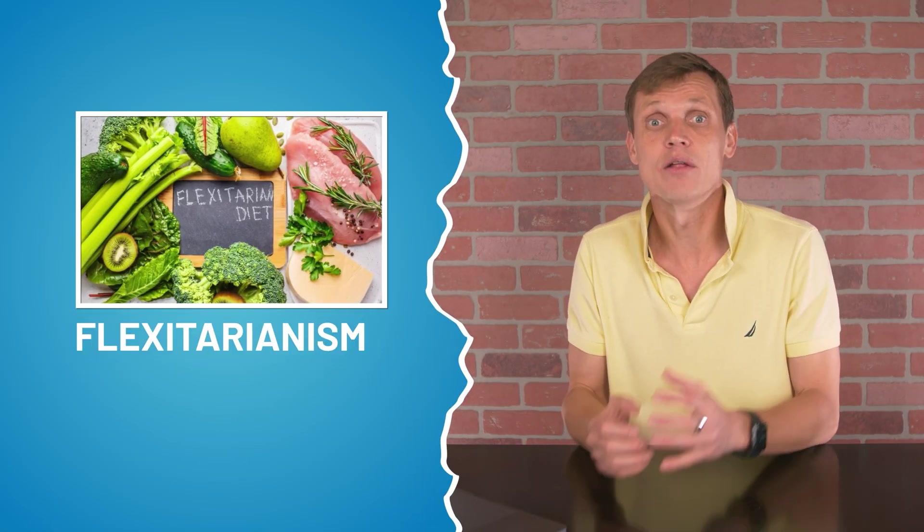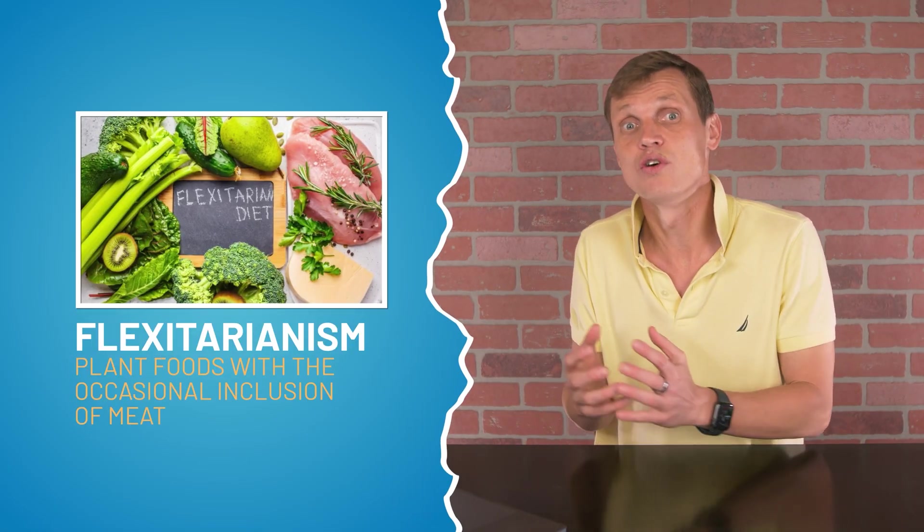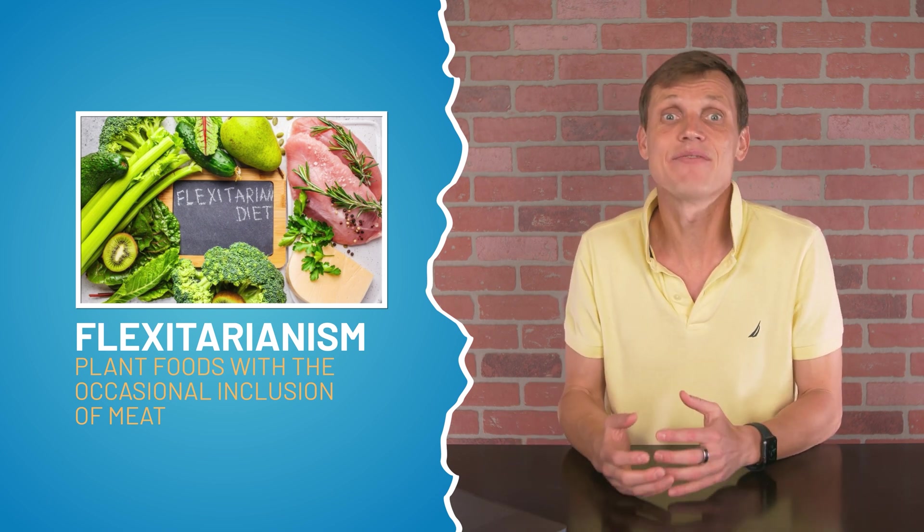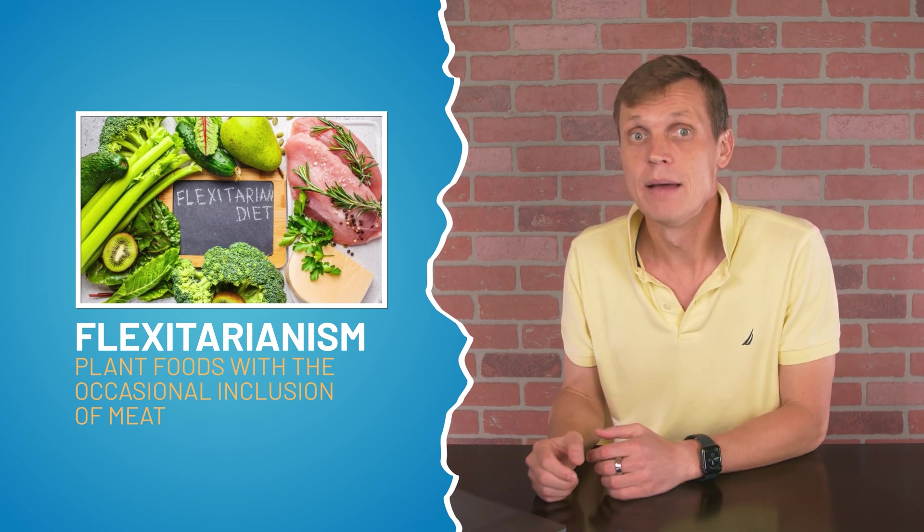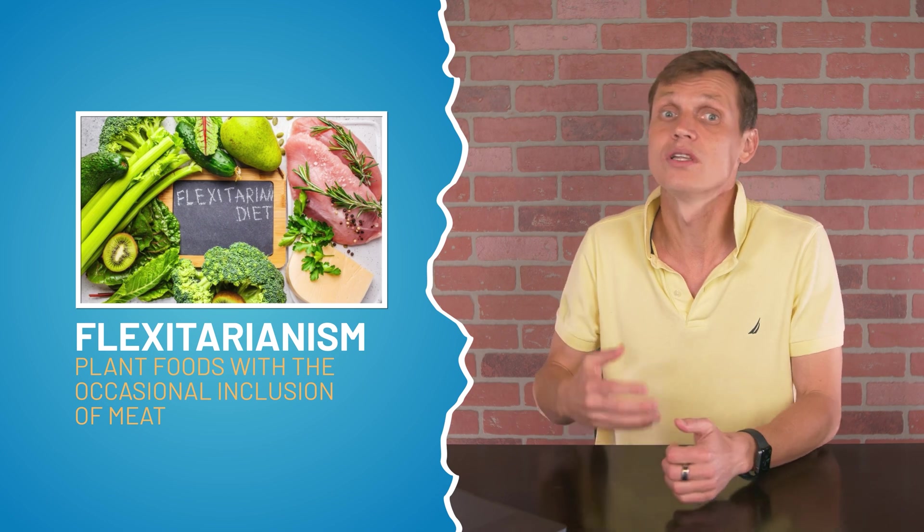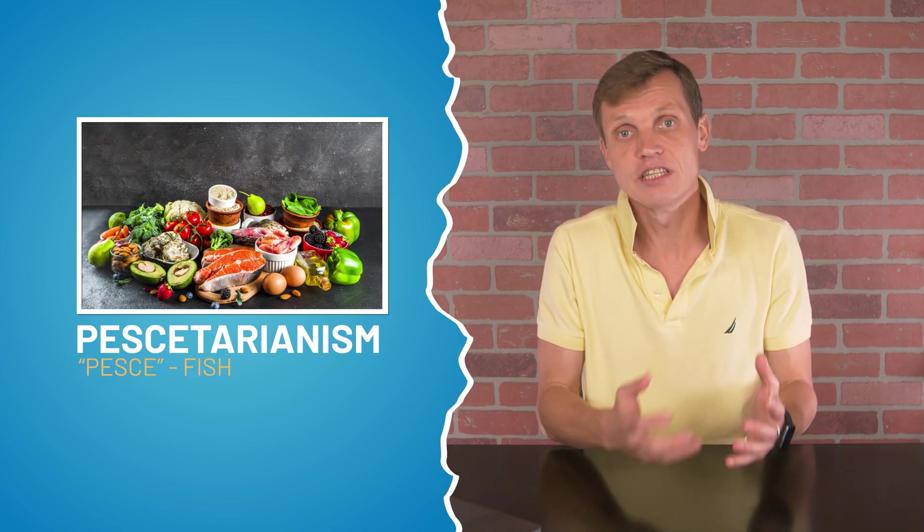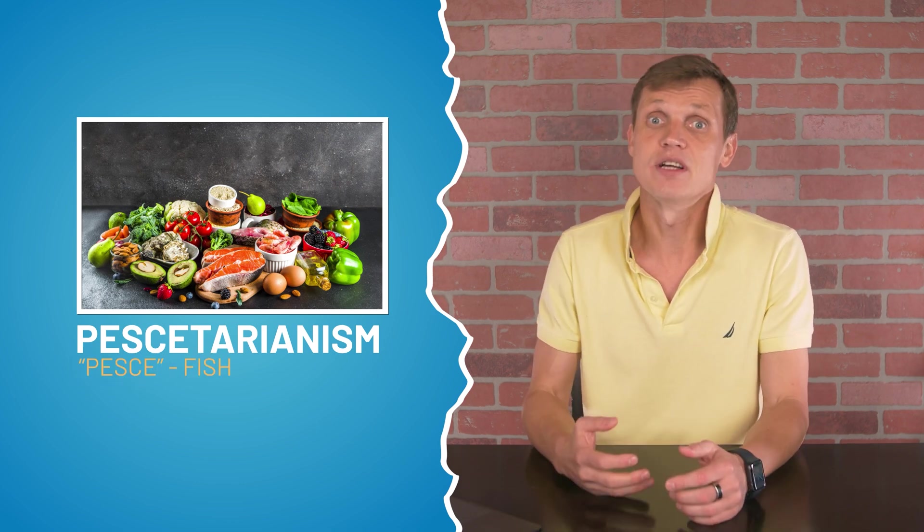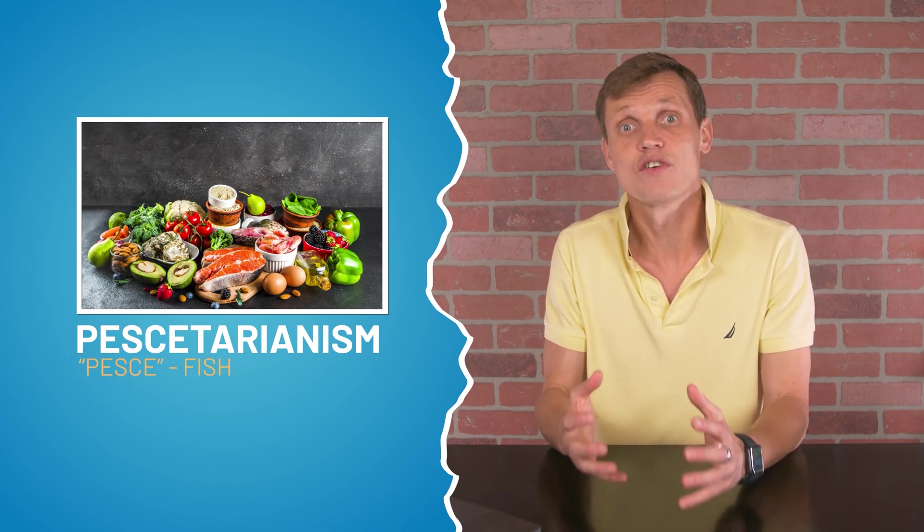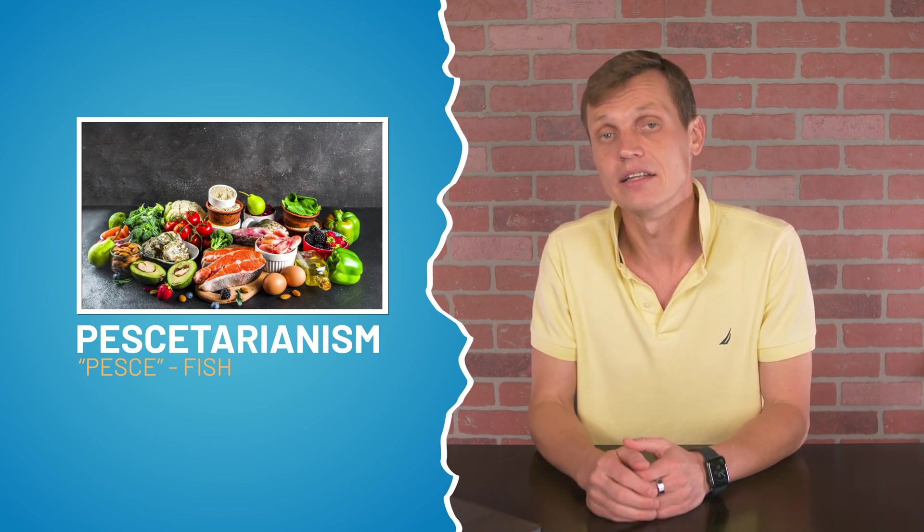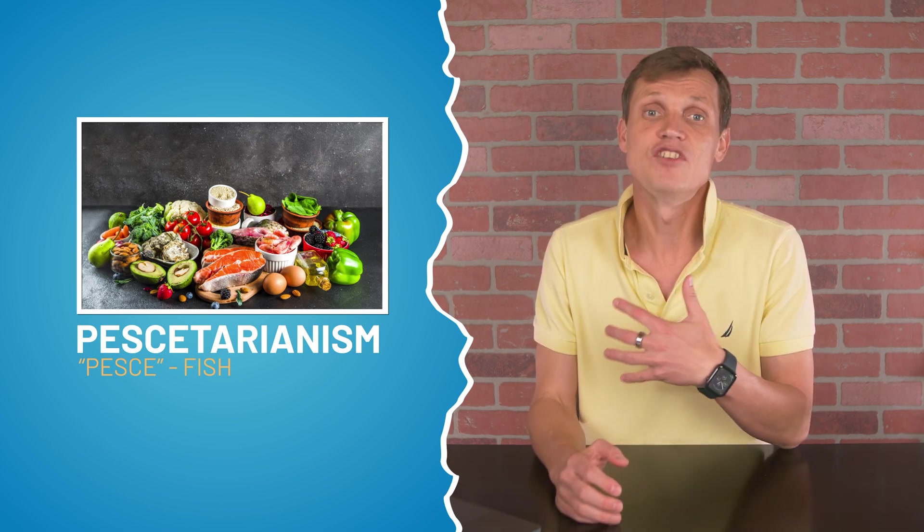By the way, there are some so-called semi-vegetarian diets. One of them is flexitarianism, a diet centered around plant foods with the occasional inclusion of meat. This diet doesn't have any specific rules or suggestions, making it an appealing option for people who are looking to cut back on animal products. Another one is pescetarianism. Pesce means fish in the Italian language. This diet incorporates seafood as the only source of meat in the otherwise vegetarian diet.